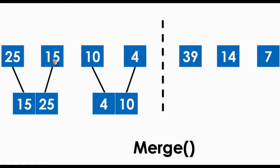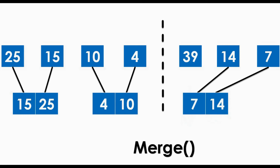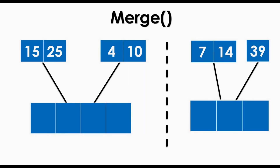In the right index, we likewise use the Merge function to produce a combined array list. Since 7 is less than 14, we get 7 and 14 as a separate array list, and 39 is placed down as the only remaining value. Again, we use the Merge function to combine the given array.